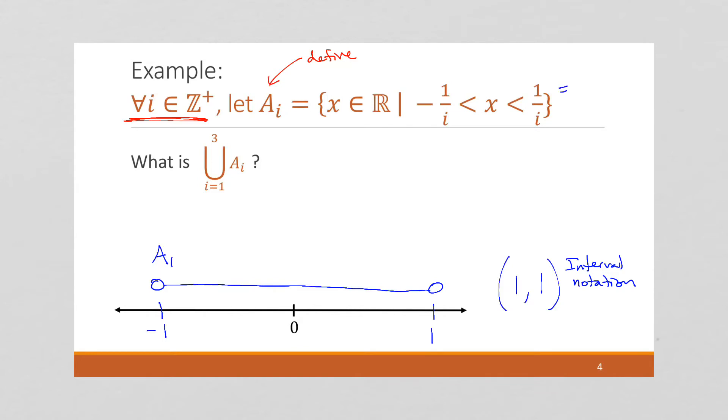Right? And so I could represent negative 1 over i to positive 1 over i by (-1/i, 1/i). And again, this is because we don't have an equal sign on these less than symbols. If we did, say we had an equal sign here, then this would be negative 1 over i to positive 1 over i inclusive. So you see how the square bracket means inclusive, so it means it could be equal. And the round parenthesis means it cannot be equal. So at the moment, this is what we've got.